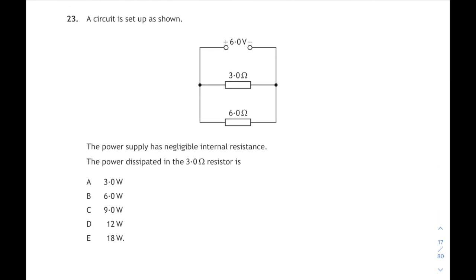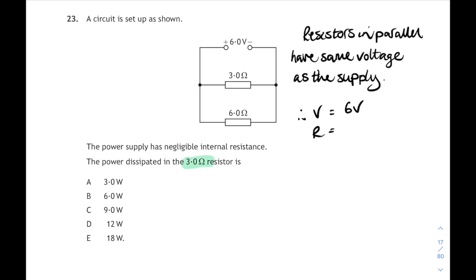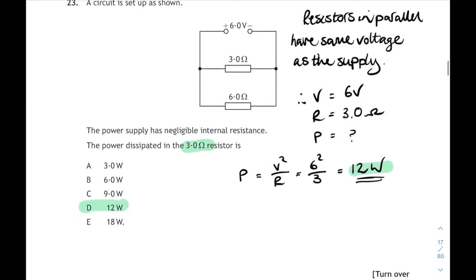23 is a straightforward parallel circuit. We have to calculate the power dissipated in the 3 Ohm resistor. Well, resistors in parallel have the same voltage across them, and in this case, that voltage would be the same as the supply voltage, so 6 volts. So if we want the power in the 3 Ohm resistor, then we look up our power equations. Which one's it going to be? If it's got P, R and V in it, it will be P is V squared over R. 6 squared is the voltage over 3 Ohms is the resistance. That's 12 watts. It's a National 5 question, but they always put a power question in. There you go, 23D.